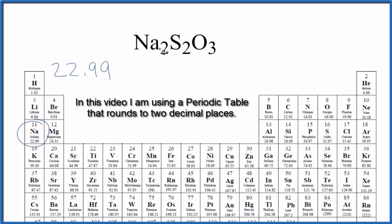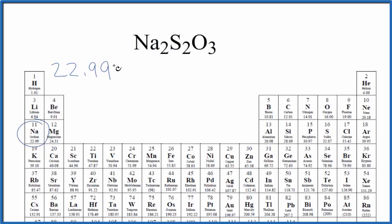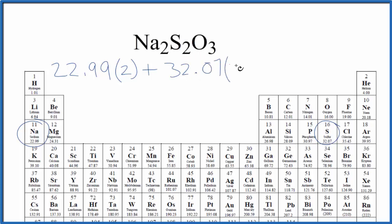I won't write that each time. We have two sodium atoms, so we multiply that by two. And then sulfur, 32.07 grams per mole — we have two sulfur atoms, multiply that by two. And then for the oxygen, that's 16.00 — three of those.